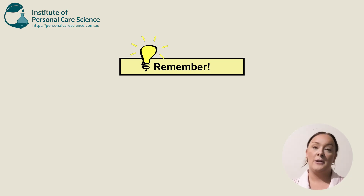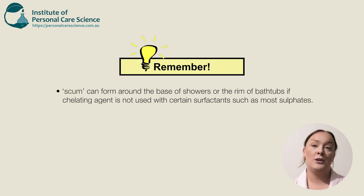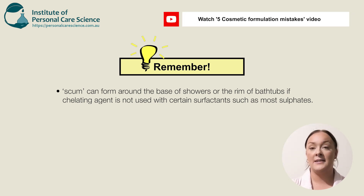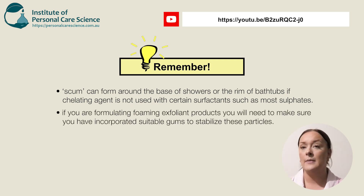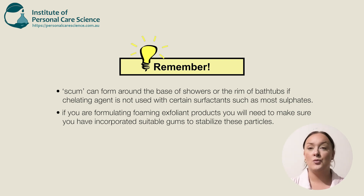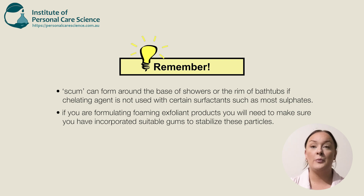Remember that the soap scum found at the bottom of the shower can be caused by surfactant formulas if a chelating agent has not been used with certain surfactants such as sulfates. Also remember that if you're formulating a surfactant product with an exfoliant component, you will need to add a gum or polymer to stabilize those particles. Make sure you're picking something with good particle suspension, otherwise your particles will either sink to the bottom, float to the top, or not be properly dispersed over the shelf life of the product.